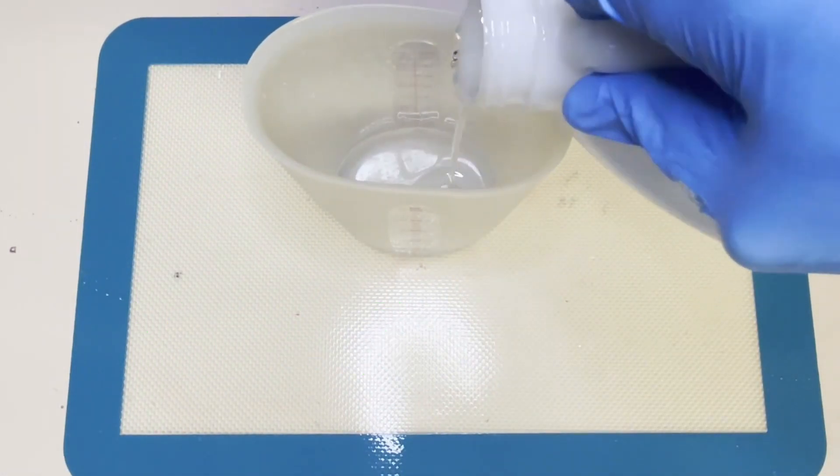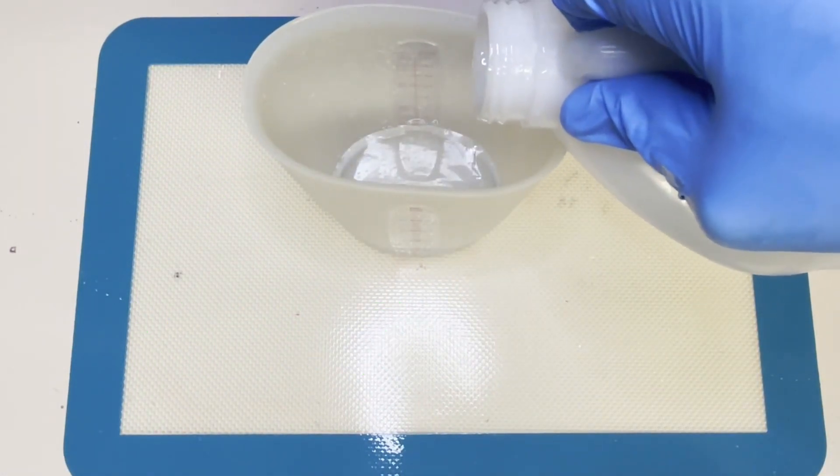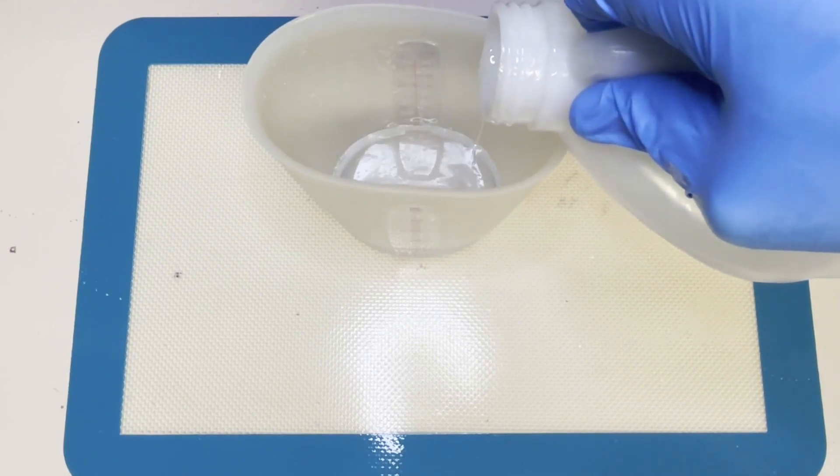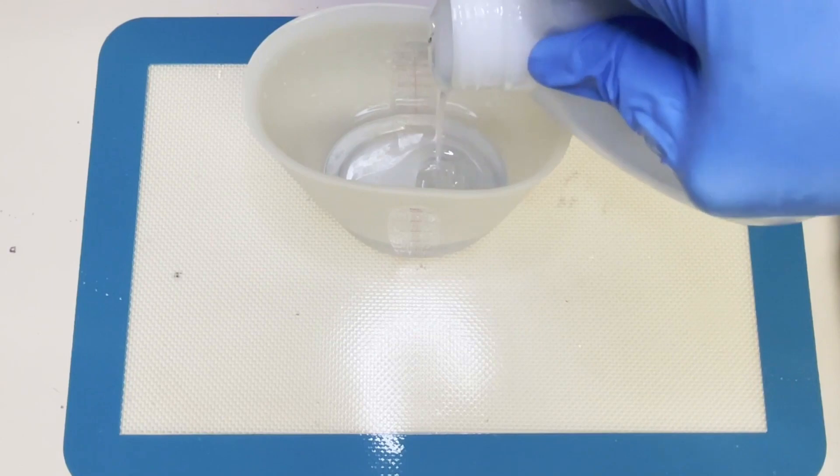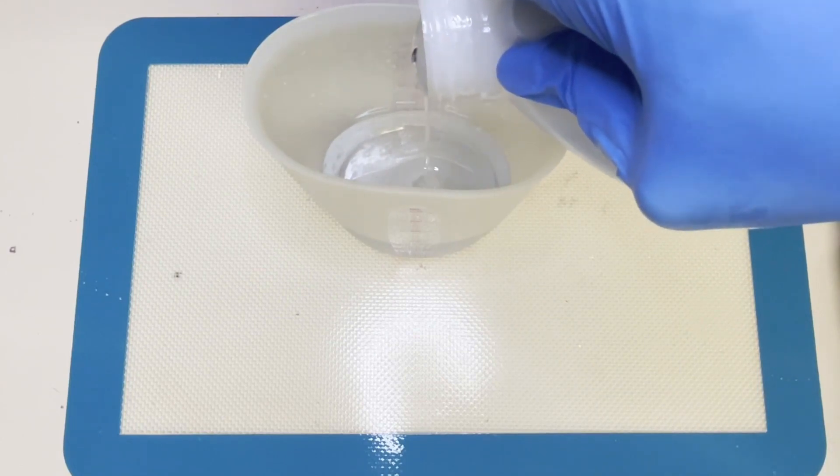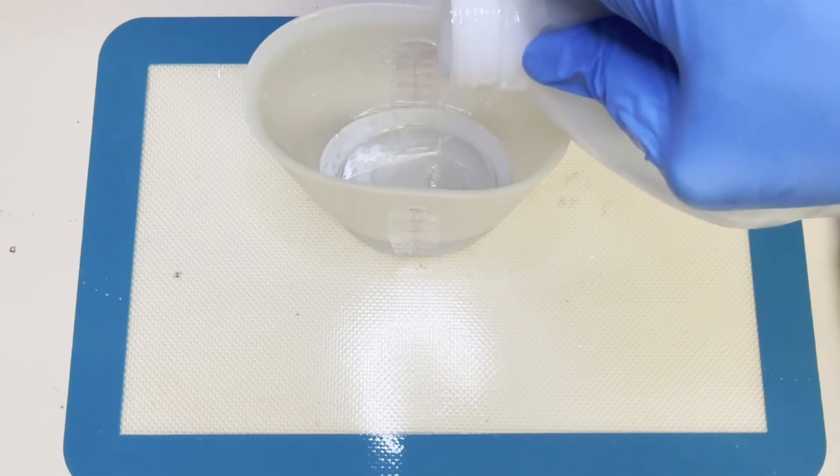So instead of using two mixing cups, I'm just going to pour both the A and B side into this one, using 100 milliliters of A and 100 milliliters of B and directly mixing it here in one cup. More simple than before.